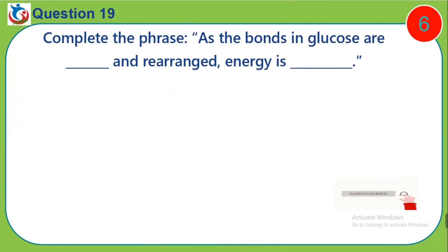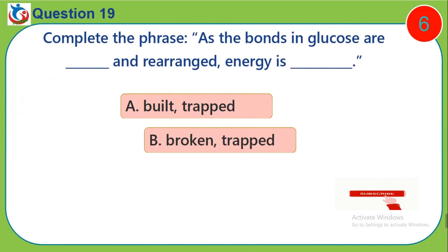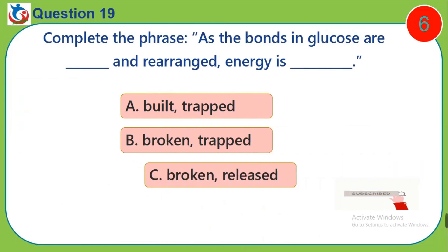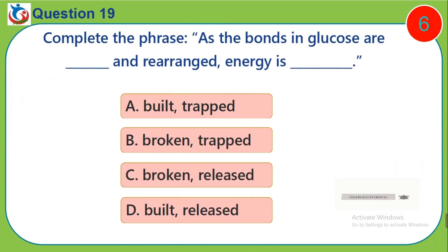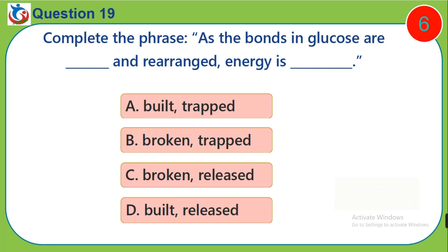Question 19. Complete the phrase. As the bonds in glucose are dashed and rearranged, energy is dashed. A, built, trapped. B, broken, trapped. C, broken, released. D, built, released.